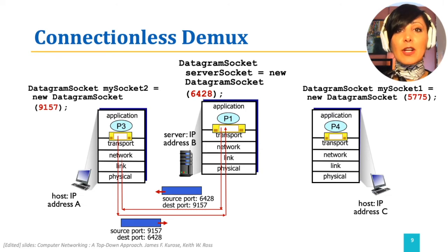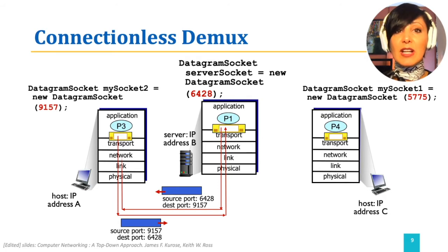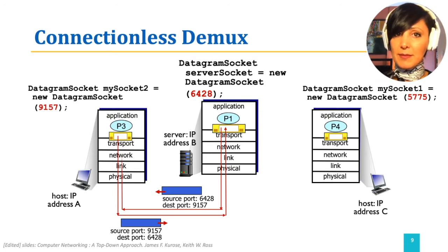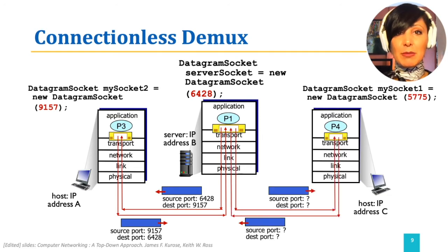When the reply arrives on the host with IP address A, the destination port 9157, regardless of the source information, will be used to deliver the segment to process P3. Can you come up with the source and destination port numbers used for communication between processes P1 on server B and P4 on server C?